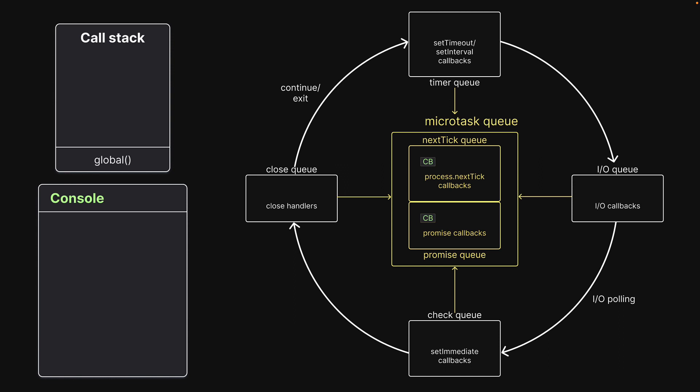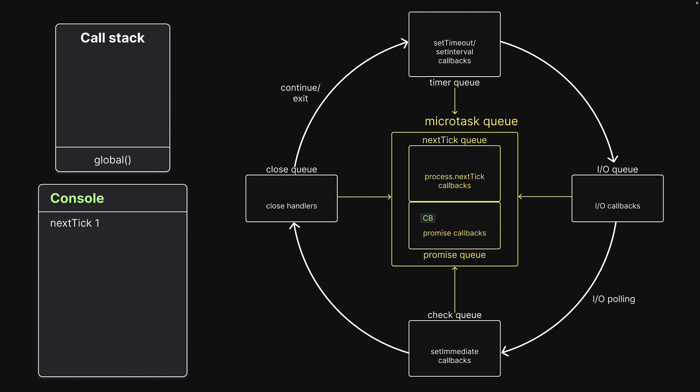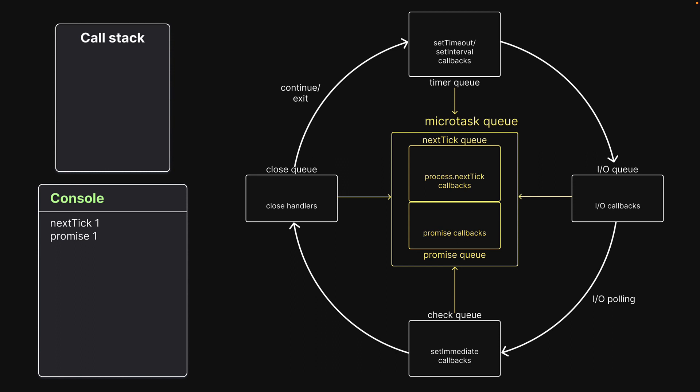After line 2, there is no more user-written code to execute and control enters the event loop. In the event loop, the nextTick queue gets priority over the promise queue — that is just how the source code is written. The event loop executes the nextTick queue callback, logs the appropriate message, and then executes the promise queue callback, logging the appropriate message. In the console, we see process.nextTick and then promise.resolve.